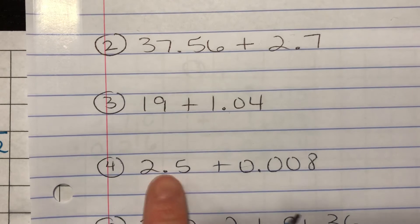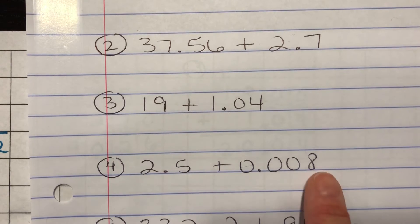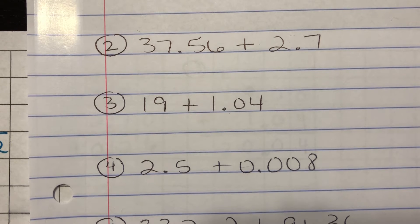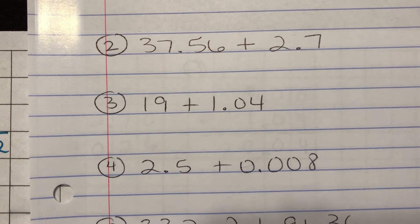Alright fourth one. I have 2.5 plus eight thousandths. 2.5 plus eight thousandths. Now maybe some of you can just look at that and know what the answer is. That's fine. Just make sure you double check it with me. So write it down and double check it with me. And the rest of us are just going to line this up on our paper.